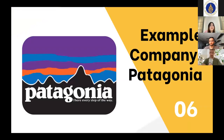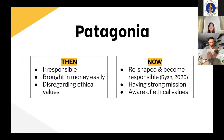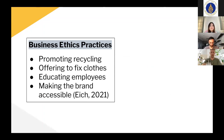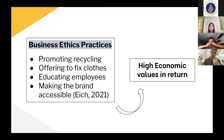Today I have used a company as an example, which is called Patagonia. Patagonia is a designer of outdoor clothing and gear. In the past, they used to be irresponsible and brought in money easily just to have enough profit, disregarding ethical values and focusing only on economic values. But now, Patagonia has changed. They have become a responsible business with a strong mission to produce the best product that causes no unnecessary harm to the environment. They are becoming more and more aware of ethical values. Practical examples from Patagonia include promoting recycling, offering to fix customer clothes, educating employees about topics relating to socioeconomic issues, and making their products accessible for people with low budgets. All of these show that Patagonia includes ethical values in their practices, and the company gets a payoff in high economic values in return.